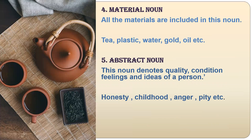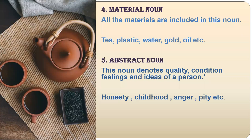Next is material noun — nouns which are made from something, like tea, plastic, water, gold, oil. Next is abstract noun — the name of something that we can't see or touch; it is intangible. For example, quality, condition, feelings, or ideas. The quotation 'Honesty is the best policy' — honesty is our abstract noun. We can't see or touch it. Honesty, childhood, anger, pity — all are abstract nouns.